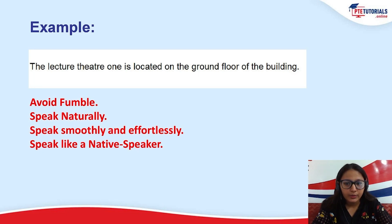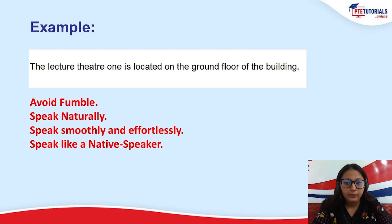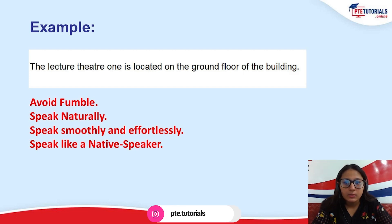When we are talking particularly about oral fluency, the most important thing is avoiding fumbles, speaking naturally, smoothly, effortlessly, just like a native speaker. If I fumble in this particular sentence, my fluency will go down. We have the tendency of speaking 'umms' in sentences — 'The lecture theatre one is located on the ground floor of the building' — hesitating while speaking. Even if I am aware of each and every word in sequence, I am still getting low scores in fluency because I was fumbling, not speaking naturally, hesitating because I was not sure of the sequence.